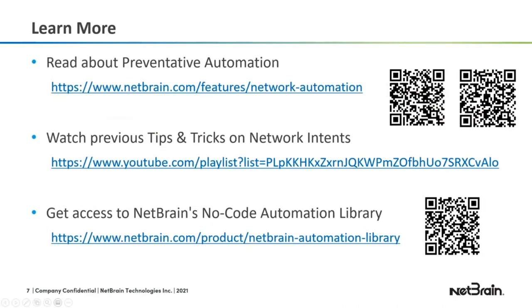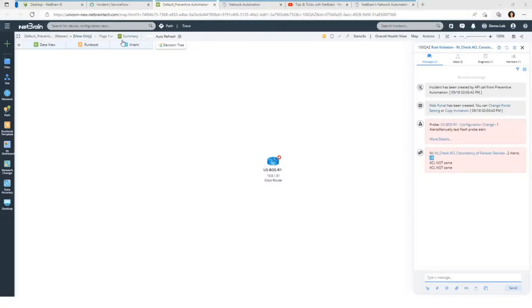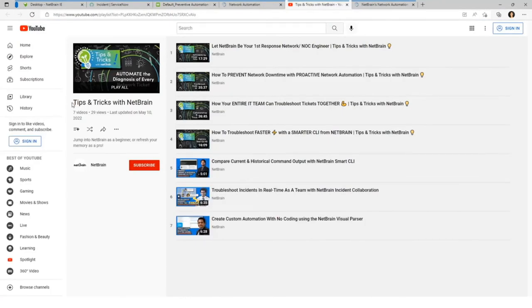I have three resources for you. The first is where you can read more about the preventative automation we offer — you can also scan the QR codes since the URLs are long. Second, I mentioned the terminology probes and network intents. We did a previous Tips and Tricks with NetBrain webinar specifically on network intent — you can find it on YouTube in the playlist of Tips and Tricks webinars to understand more about the secret sauce behind NetBrain's preventative proactive network automation.